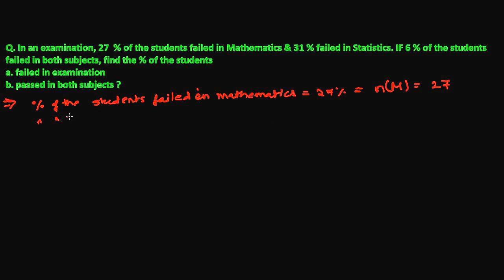The second information is 31% failed in statistics. Percentage of students failed in statistics is how much? That is 31%. So in cardinal number form, I can write N(S) equals 31. And if 6% of the students failed in both subjects.